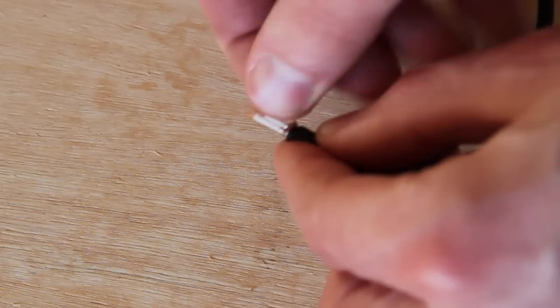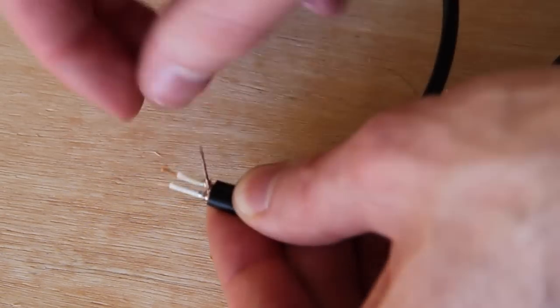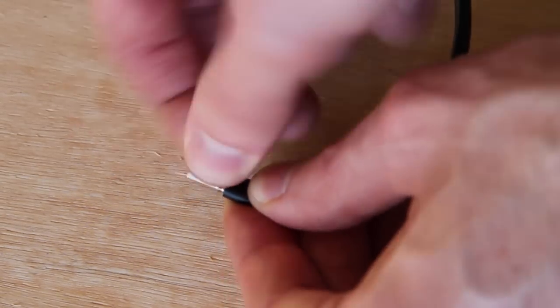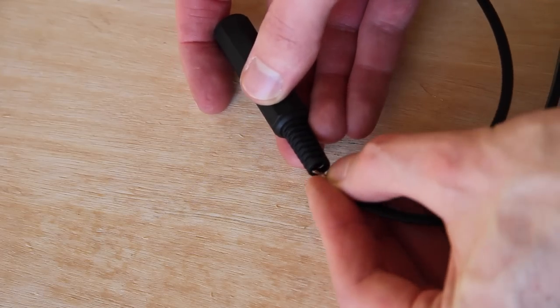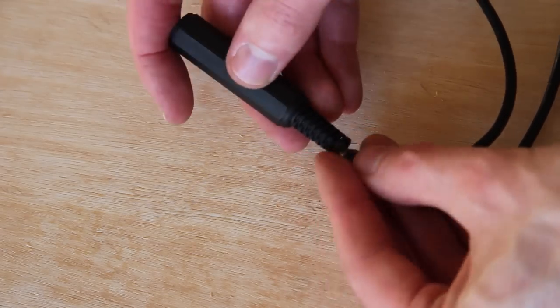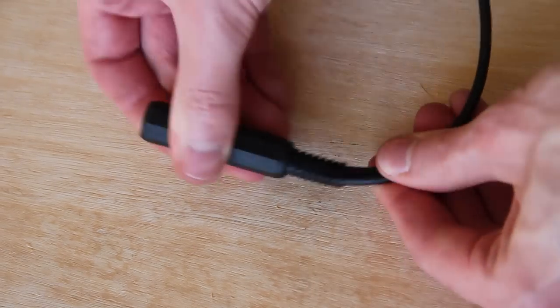Now take both parts of the guitar cable and twist the ground cables together. Impose the casing of the stereo jack. Also impose a heat shrink tube after.